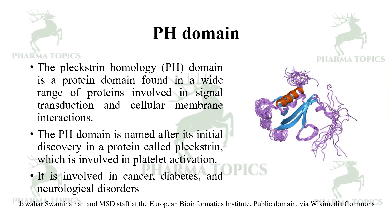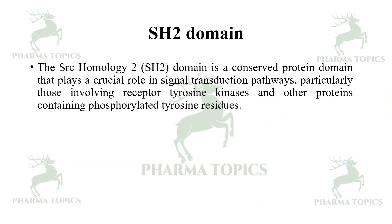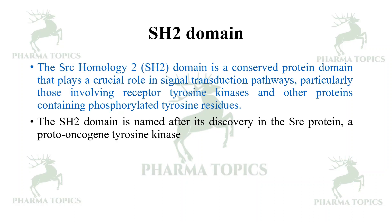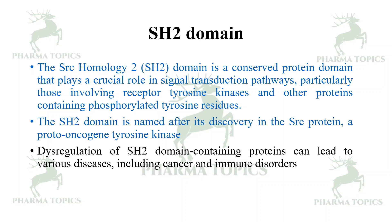The next is the SH2 domain. The Src homology 2 (SH2) domain is a conserved protein domain that plays a crucial role in signal transduction pathways, particularly those involving receptor tyrosine kinases and other proteins containing phosphorylated tyrosine residues. The SH2 domain is named after its discovery in the Src protein, a proto-oncogene tyrosine kinase.